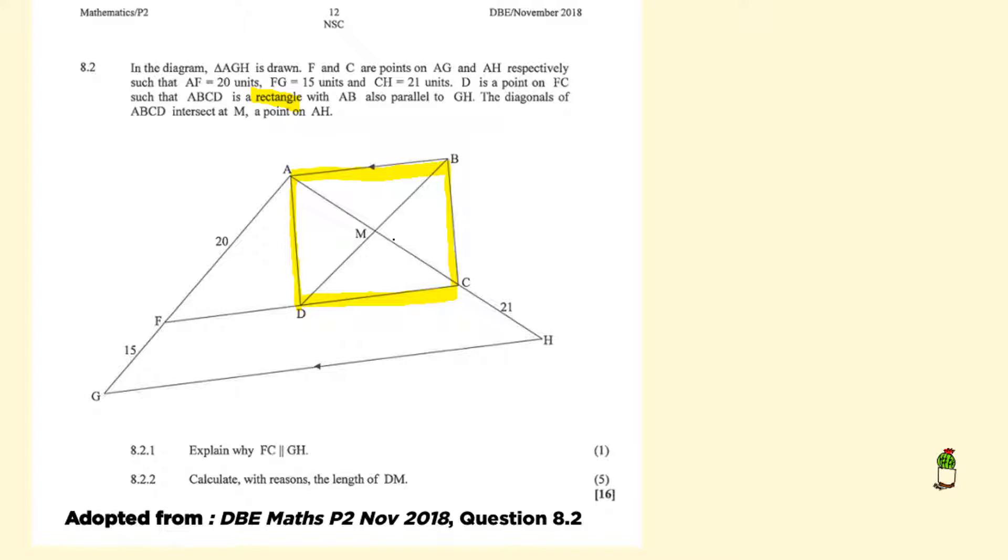Remember that with a rectangle, the opposite pairs are parallel to each other. This side, parallel to that. They are also equal in length. So the opposite sides of a rectangle are also equal in length.